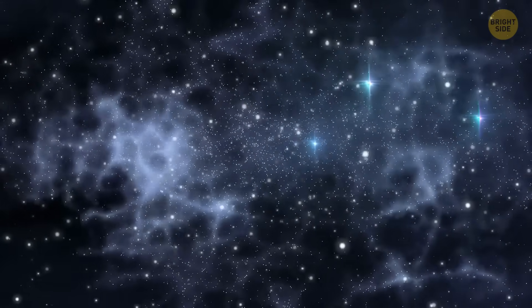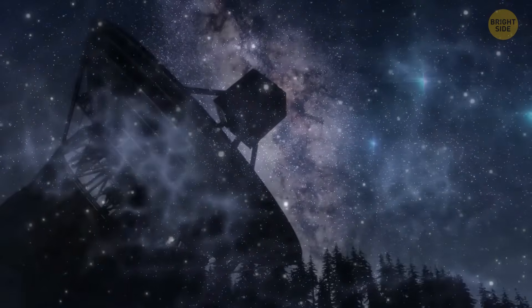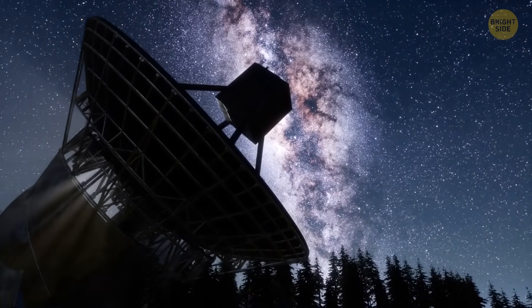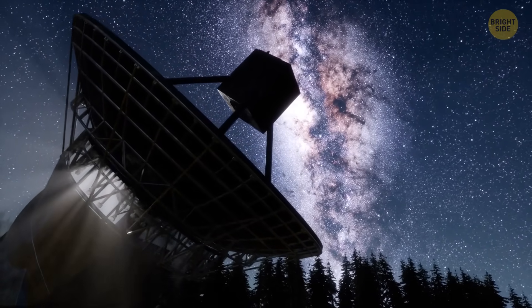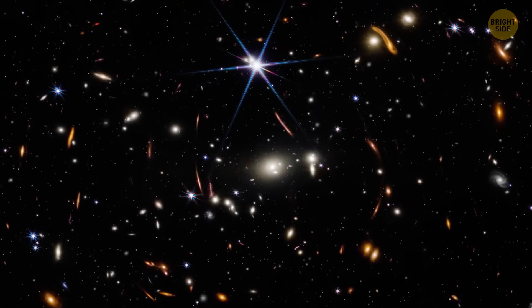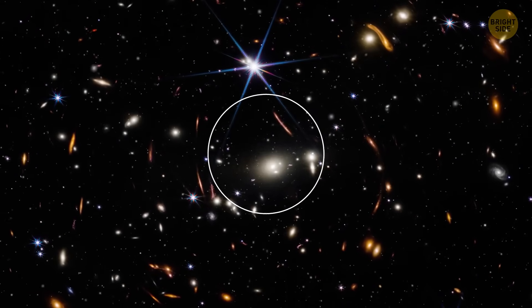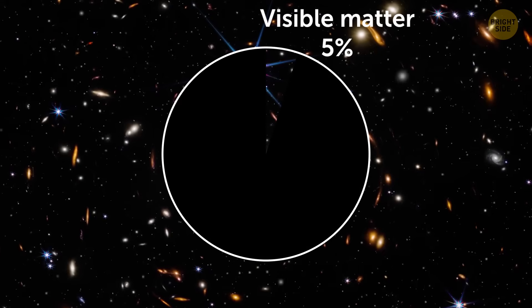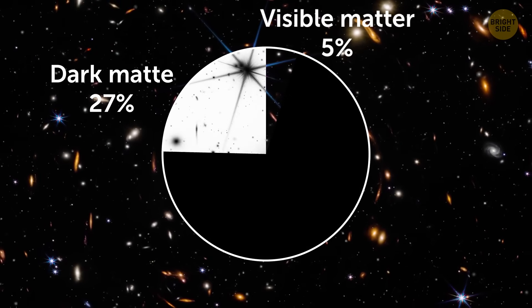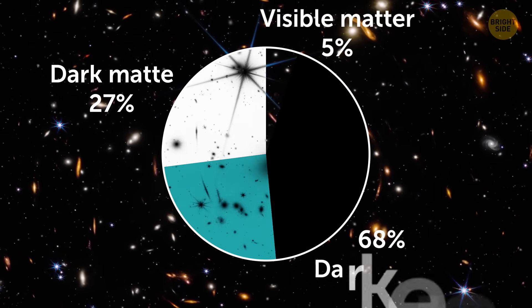Dark matter is basically that invisible stuff that keeps the universe from falling apart. It's everywhere, we just can't see it. Scientists have been trying to figure out what it actually is for almost a century, and it's still one of the biggest mysteries out there. Everything we can see, like stars, planets, people, dogs, makes up only about 5% of the universe, and dark matter makes up around 27%. The rest is something even stranger called dark energy.